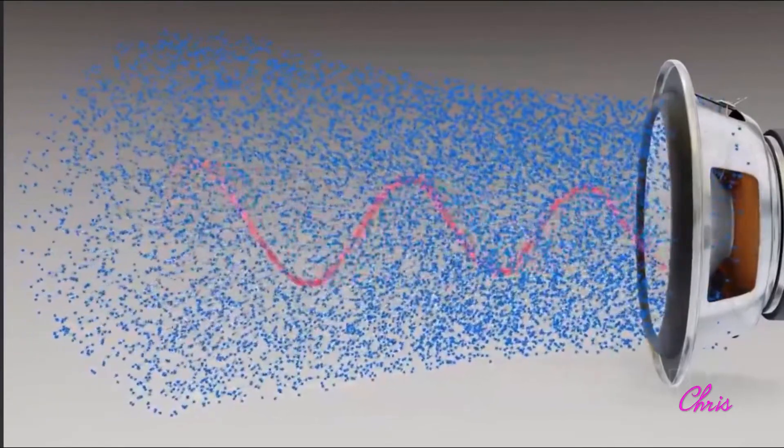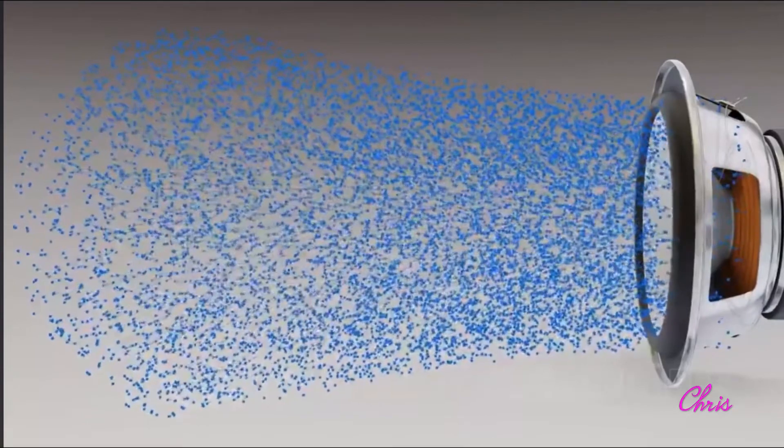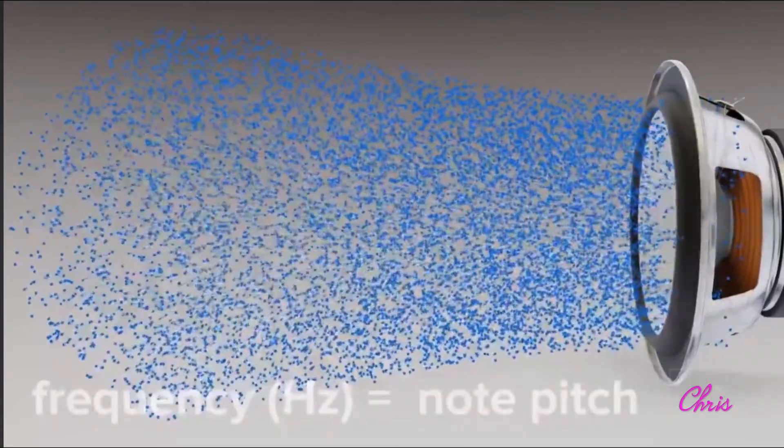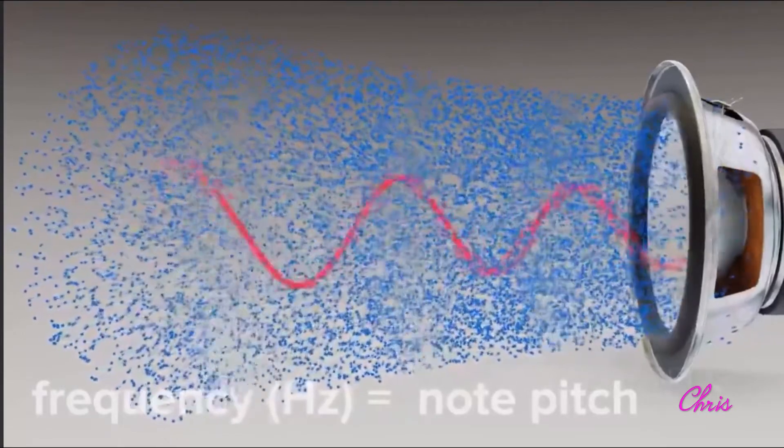To make high and low sounds, the speaker vibrates faster or slower. The wave rate is its frequency, measured in hertz. Or in musical terms, its note pitch.